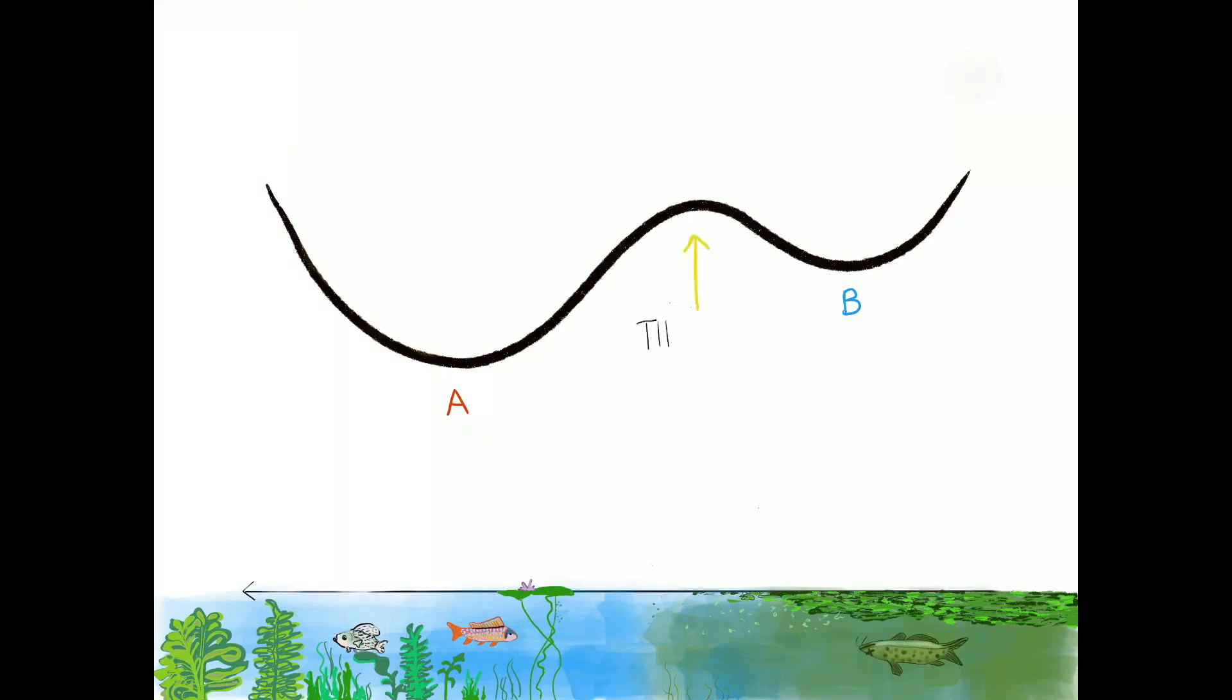The hill represents an unstable state that separates the two basins of attraction. It is important to note that a situation with intermediate water clarity is not stable.